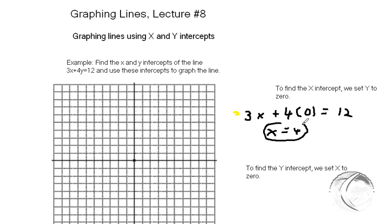Now when I actually write my intercepts, I write them as an ordered pair. What did I say? I set y to zero, right? So the y coordinate is zero, and the x coordinate is 4. So that's my x intercept.